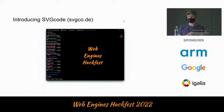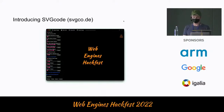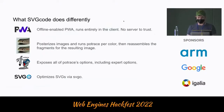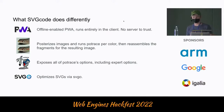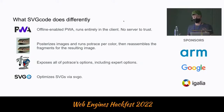Usually after some fiddling and experience with which controls to tweak, you get something useful. I've converted the Web Engines Hackfest logo into an SVG that I could actually work with. What SVGcode does differently than most server-hosted tools: it's a PWA, it's offline enabled, it runs entirely in the client so there's no server to trust. It allows you to posterize images so you can convert photos. It sends different colors per channel to the PoTrace tool, which does the tracing and conversion into SVG, and then reassembles the resulting image.